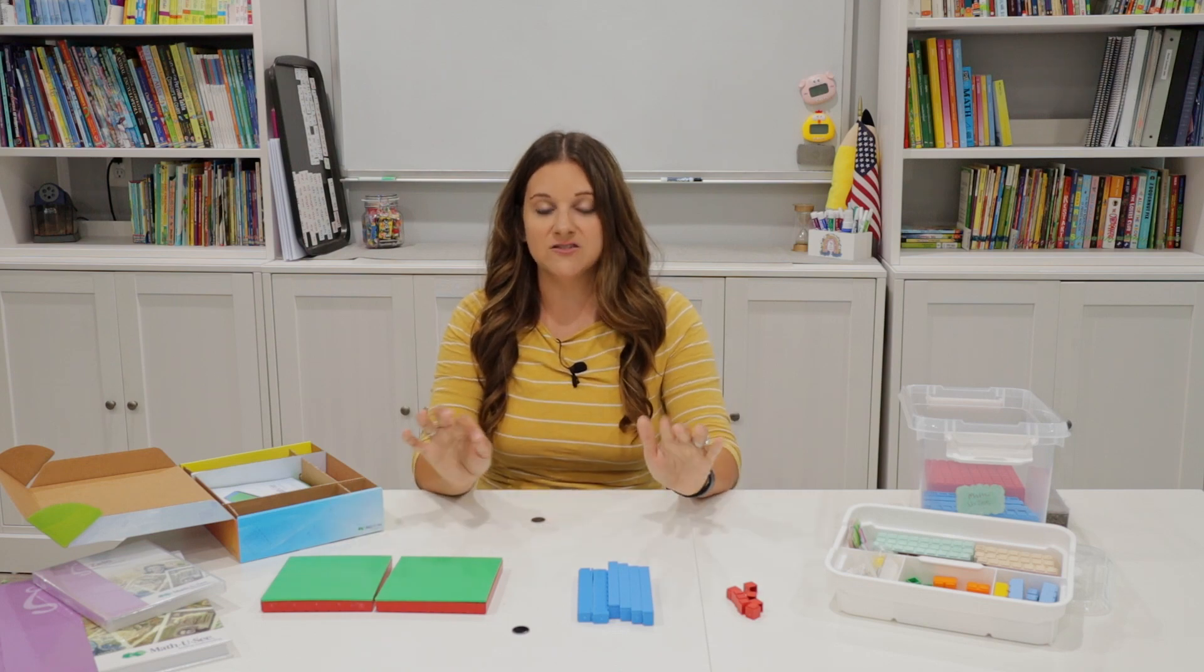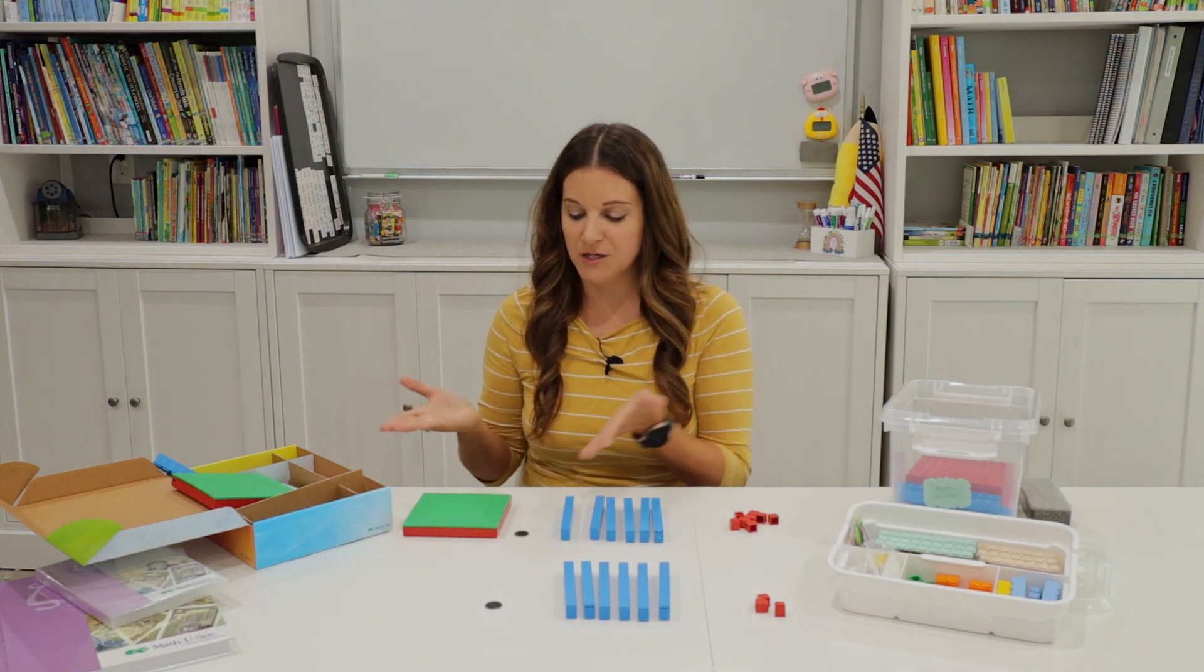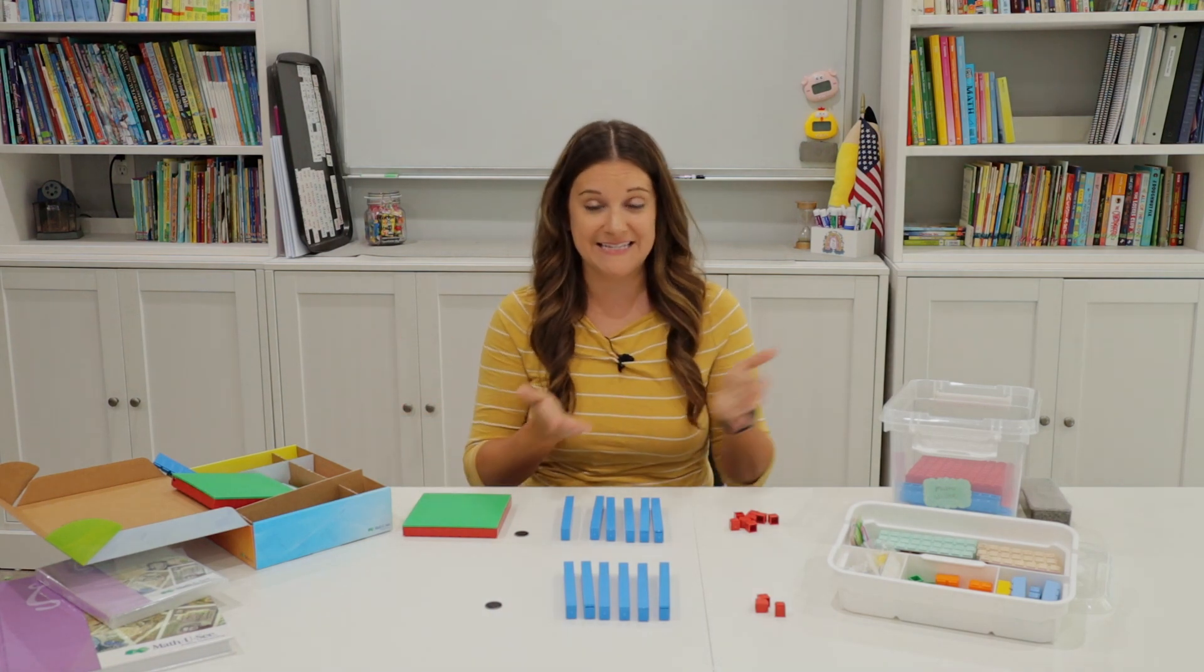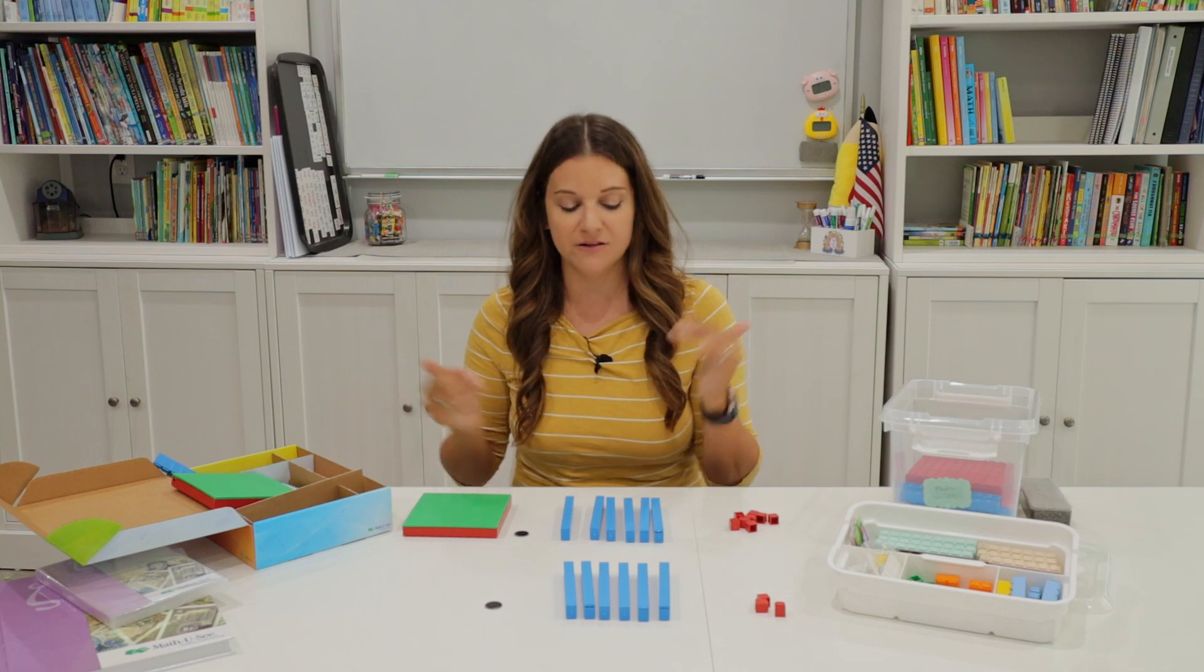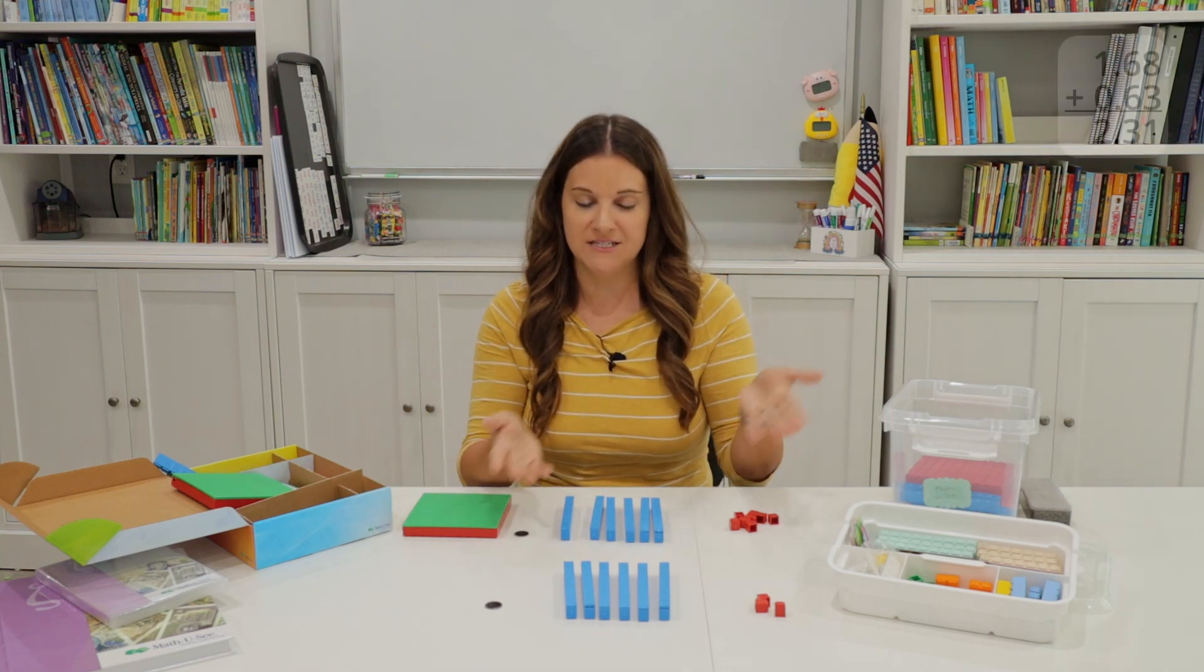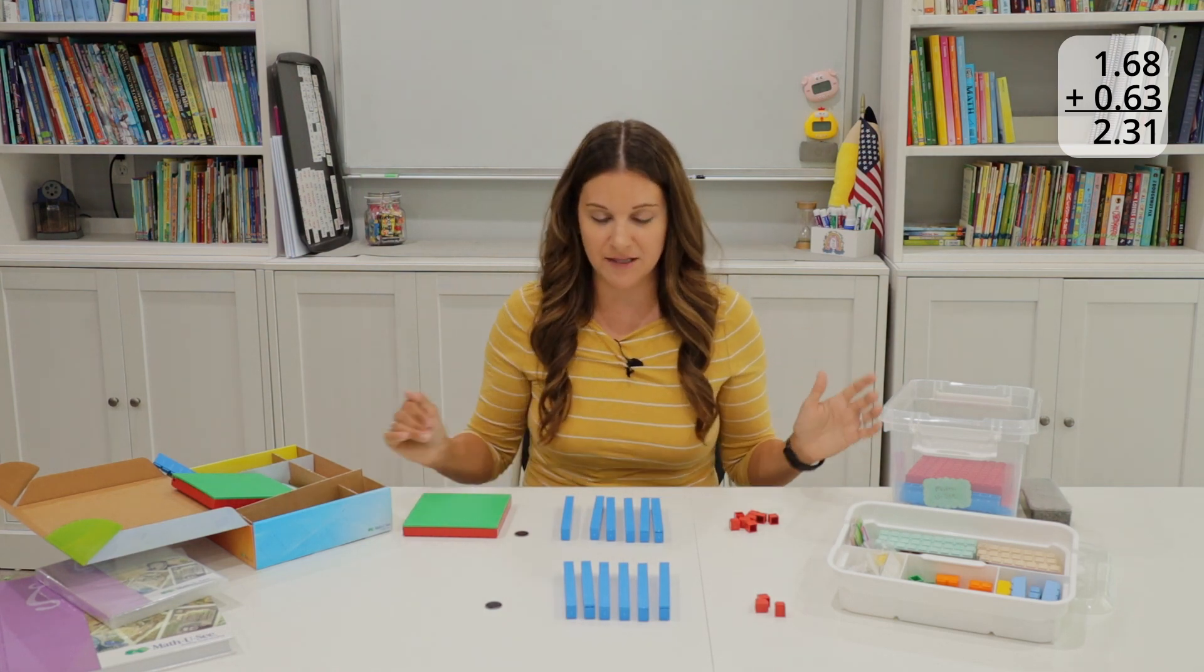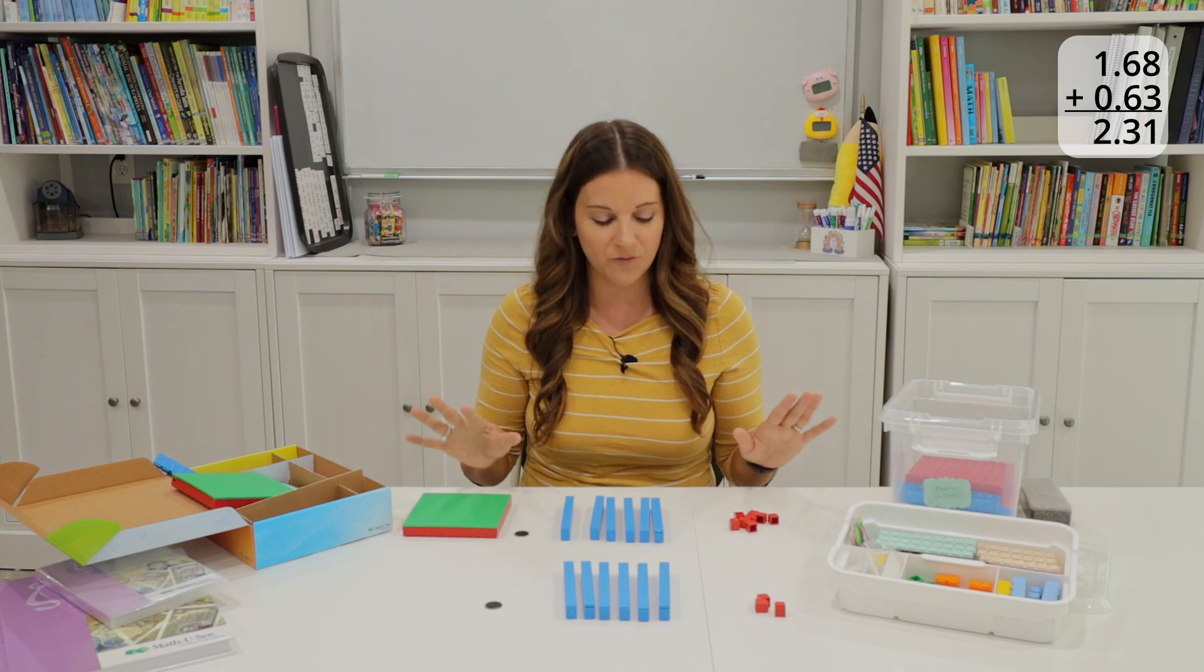So now let's go ahead and do one where I have to actually carry the numbers. For the next example, I'm going to be adding one and sixty-eight hundredths—so we can say one dollar and sixty-eight cents—plus sixty-three hundredths or sixty-three cents. So to start off, my student can see that everything's in its right place because of those colors. It's really helpful.